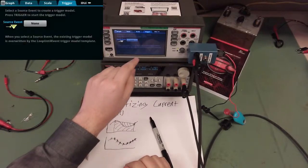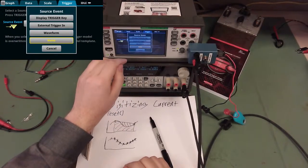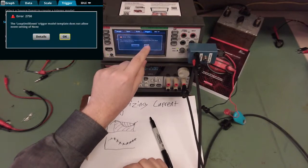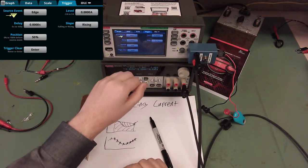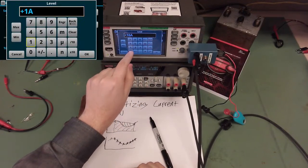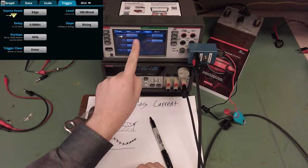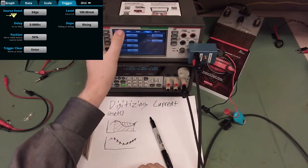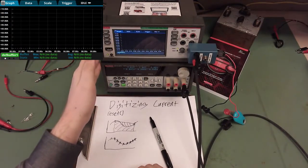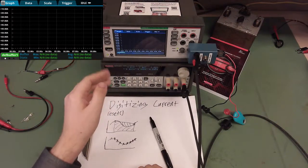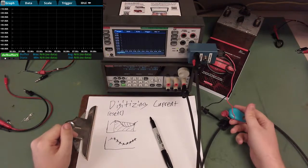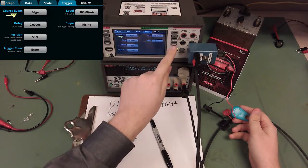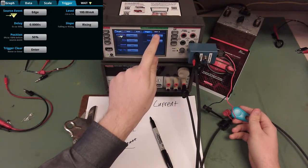We're on the one-amp range and setting up a waveform trigger — like the graphical triggers you see on oscilloscopes. We're triggering on an analog edge at 100 milliamps level on a rising edge. After pressing the trigger key, the instrument shows 'wait', and after triggering the IoT device to beep, the instrument goes busy as it processes all the captured data.